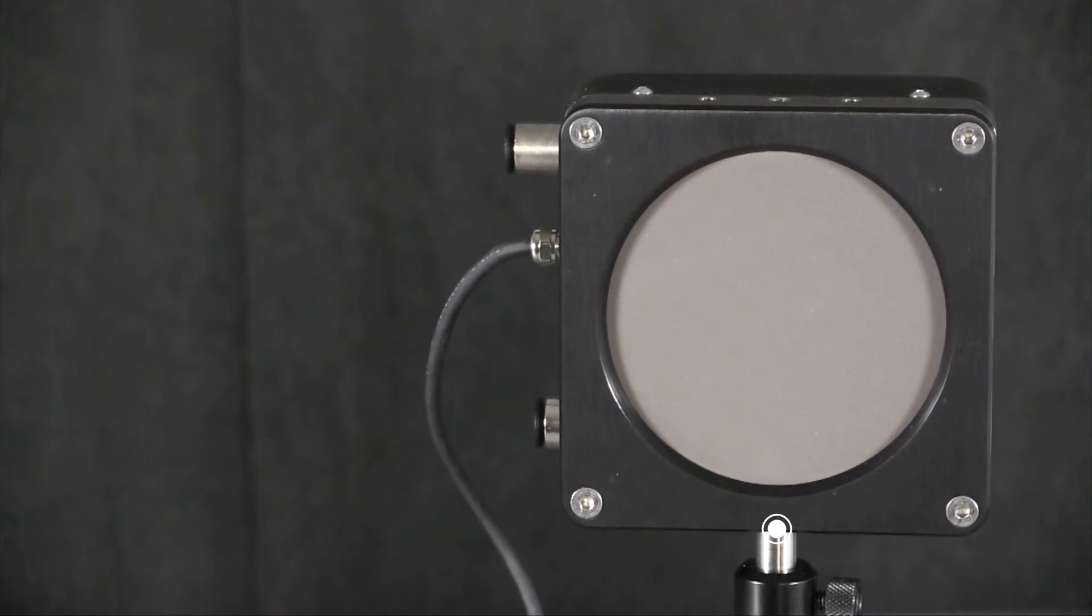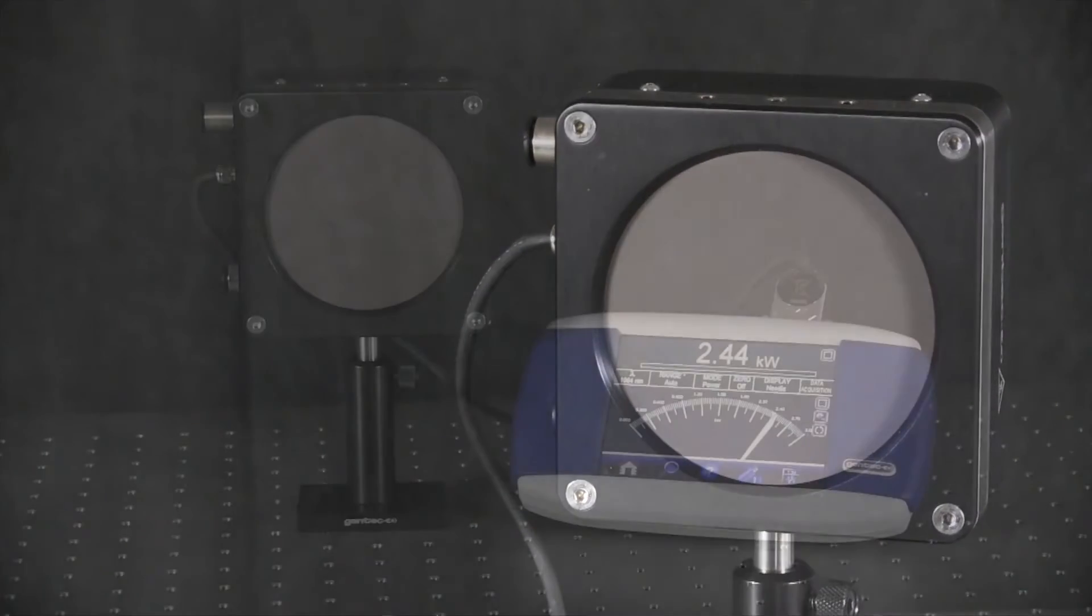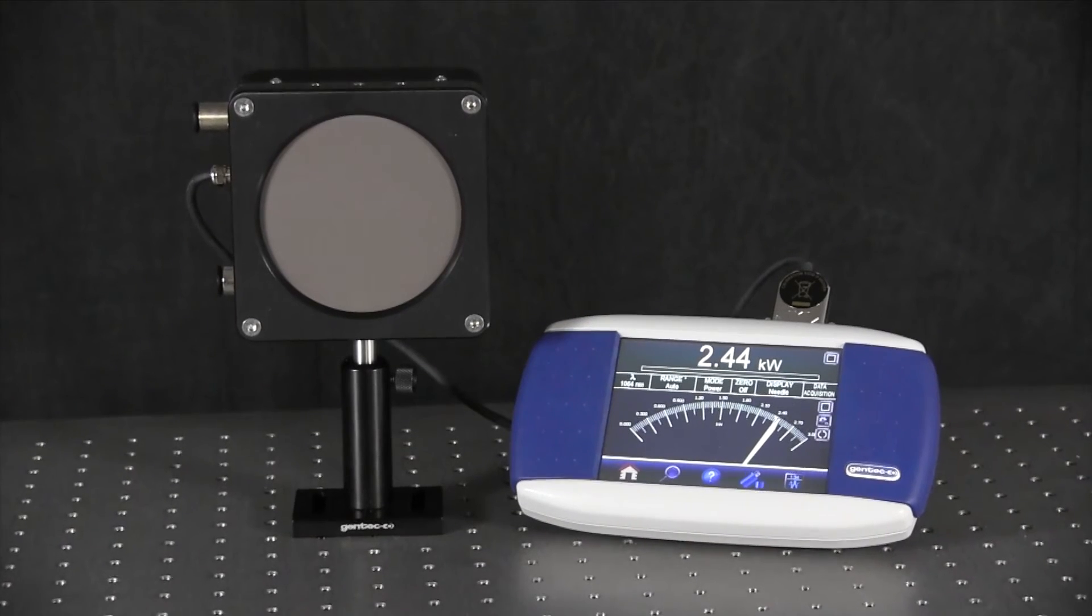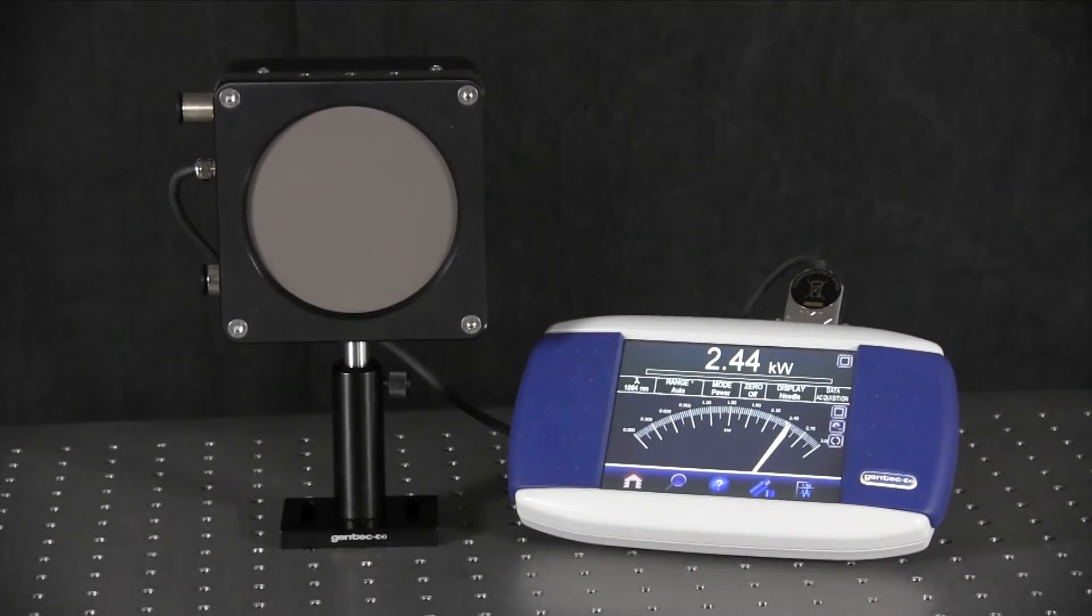And finally, the housing includes several quarter-twenty threaded post holes for mounting. With an HP probe plugged into our Maestro digital power meter, you'll be able to read the power directly in one of several ways.